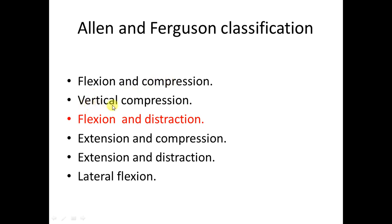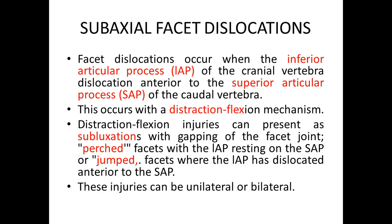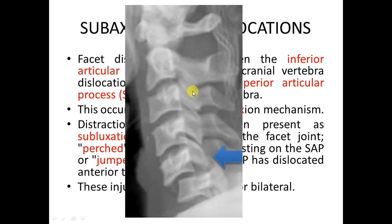You also have vertical compression, where the head is neutral and the deforming force is compression. Other mechanisms include flexion-distraction, extension-compression, and extension-distraction. The most important mechanism here is flexion-distraction — the head is flexed and distraction starts from the tip of the spinous process with its attached ligament, progressing anteriorly. This will either sublux or dislocate the spine, making subaxial facet dislocation the most important injury in this region.